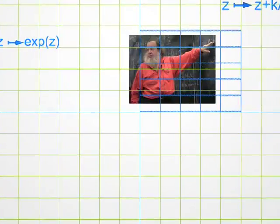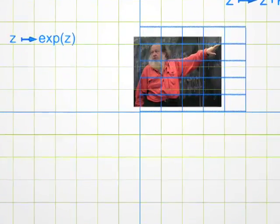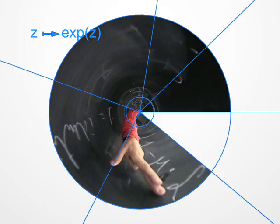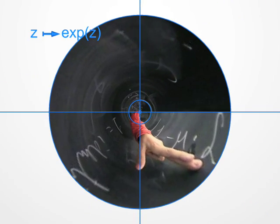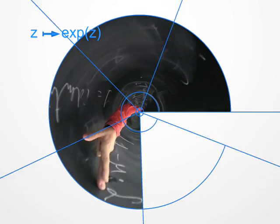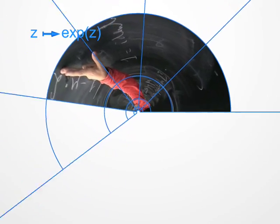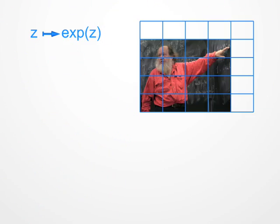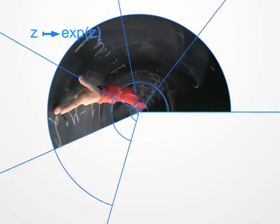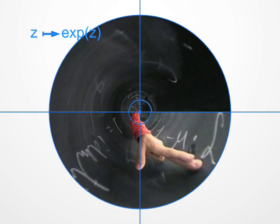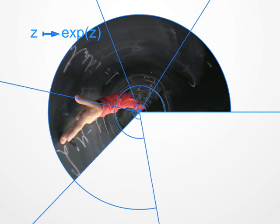Indeed, with complex numbers one can do quite a lot. One can even take the exponential, if you know what this means. But even if you don't know, look at the treatment I have to suffer from the exponential. Has my head disappeared? No. If you looked through a microscope near the origin, you could see my beard.